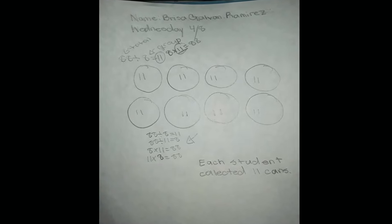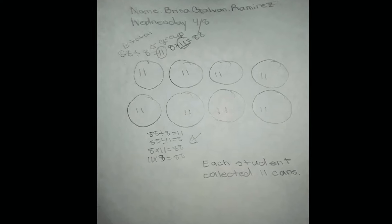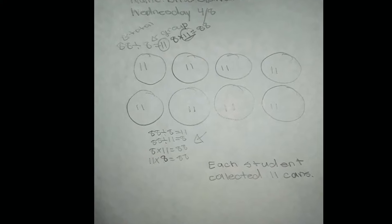She drew out eight circles and put 11 in each. She wrote out her number sentence, 88 divided by 8 equals 11, even took the time to do her fact families. And then she said that each student collected 11 cans. Great job, Brisa.